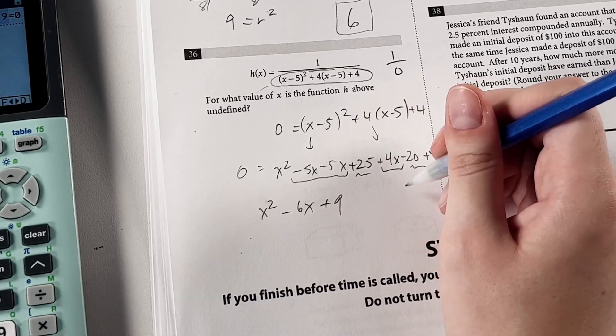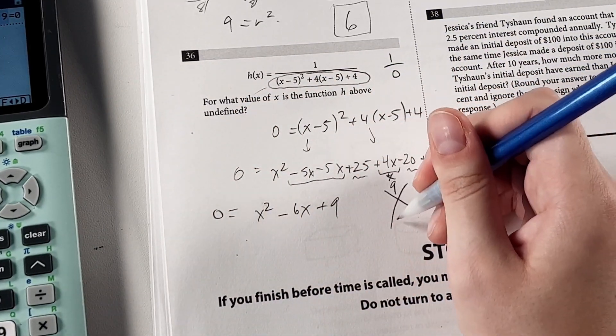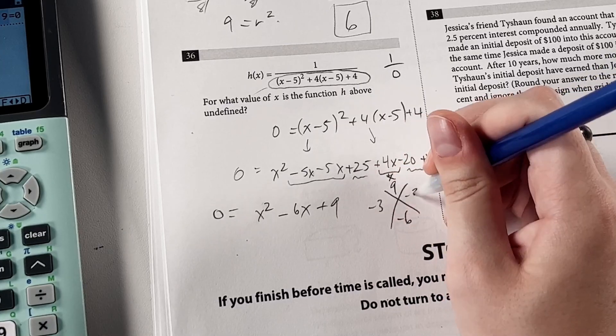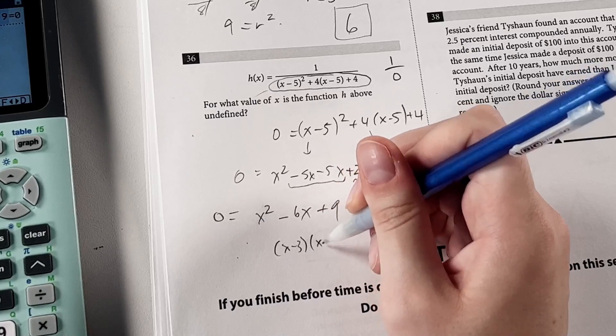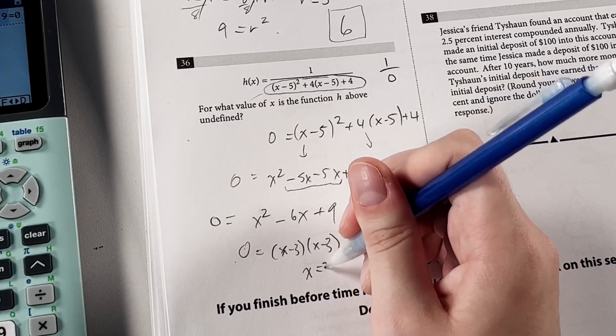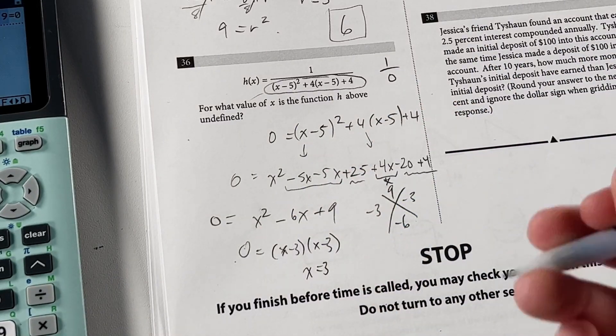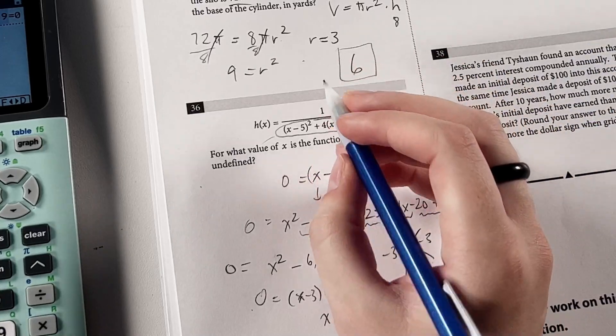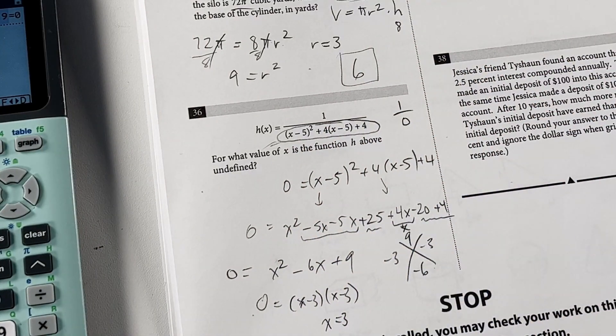We could also just solve this using the x method or a similar method of factoring. So if you have what multiplies to 9 and adds up to negative 6, we get negative 3 and negative 3. So then if we have x minus 3, x minus 3 equals 0. Solving for x would give us x equals 3 in both cases. So we did it two ways, got the same answer. Third way to check this would be just to plug in the 3 to this denominator and see if you get zero. But I'm pretty confident in that.